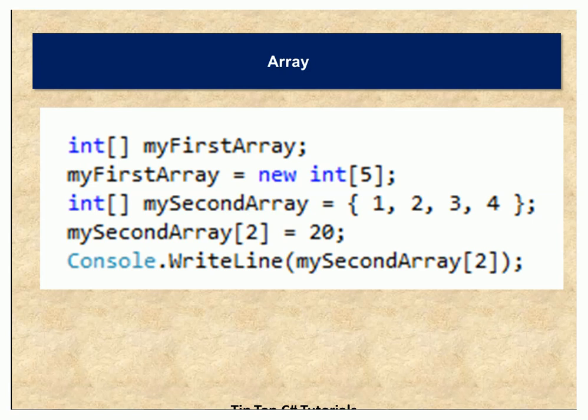So we have four elements being specified here. If you want to change one of the elements using an indexer, you can use the syntax mySecondArray[2] equal to 20. What that does is assign the value 20 at the second index. You can print the result to see the assigned element. Let's also discuss the peculiarity and limitations of array.